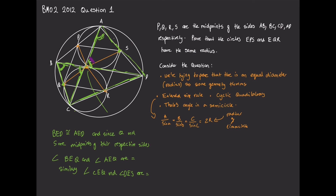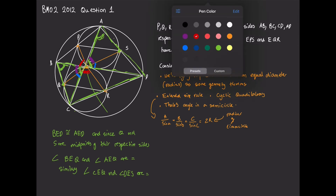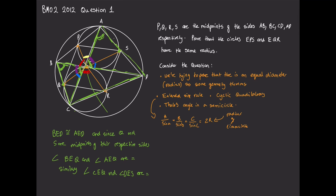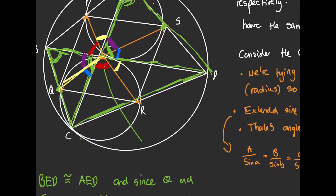Now that we have these angles as equal, we'll mark them in different colors to make it clearer how we're going to show that the target angles are the same or supplementary. We have that CEQ and DES are the same, and BEQ and AES are the same. We also have that PEB and REC are the same, and therefore PEA and RED are the same as well. We'll mark those with yellow. Now we assign each colored angle a different value.